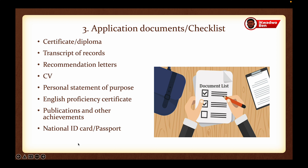In your statement of purpose, state why you want to study a specific program, what that program can do for you after graduation, and how you are going to contribute to your nation's development when given access to a scholarship package. Next is the English proficiency certificate. You have many ways to prove your English proficiency — some universities may request a specific certificate such as IELTS or TOEFL, while others may request an English proficiency certificate from your previous university.